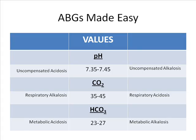Our last number, our bicarb, is the metabolic component. The normal range is 23 to 27. Anything less than 23 and we have a metabolic acidosis. Anything greater than 27 and we have a metabolic alkalosis.